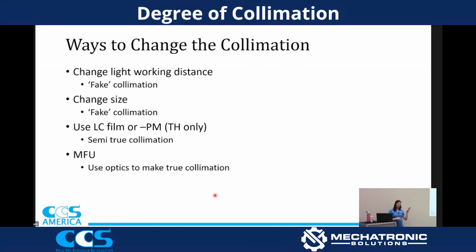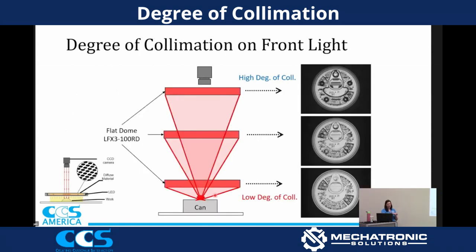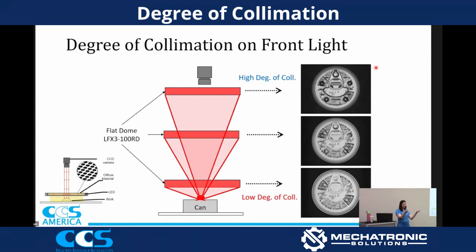Degree of collimation also applies to front lighting — I think this is where it gets overlooked the most. If I take the LFXV and put it really close to my part, it works like a dome light and removes all 3D structures. As I move it further and further away, I'm actually highlighting those 3D structures. So depending on what I need to solve, putting the LFXV too far away might not work, and I'd toss it aside and move on — but I could have had the best solution if I'd just adjusted the working distance. This applies to bar lights, ring lights, and anything else. Before you move on from a light, always adjust your working distance to make sure there isn't a sweet spot that solves the application.